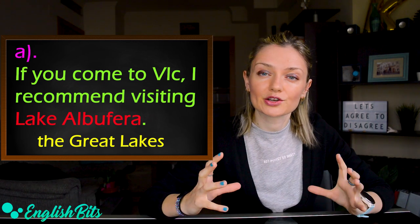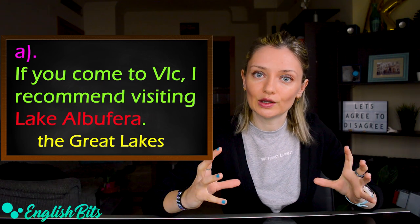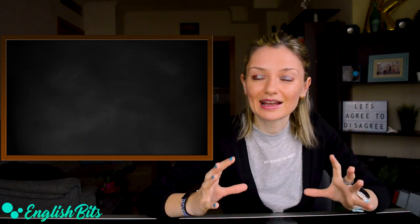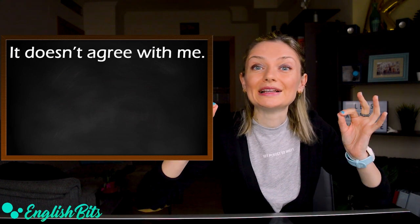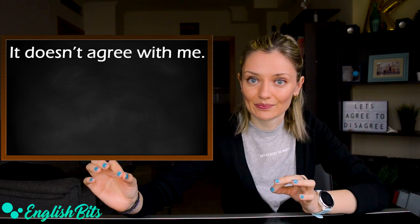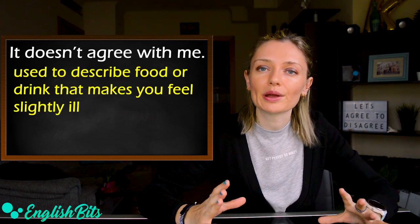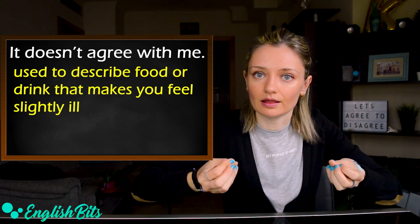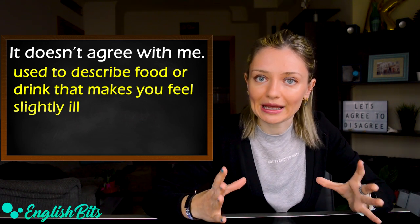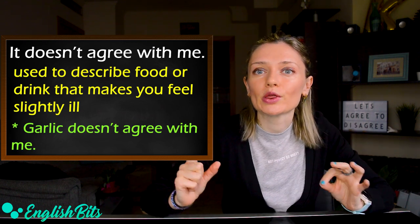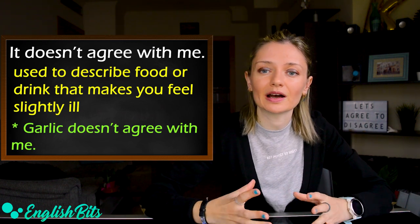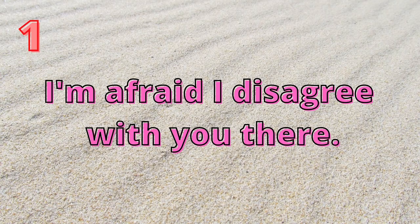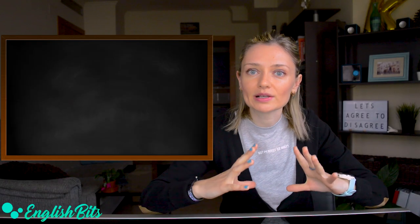Before we look at 10 expressions, just a little side note. I'm going to give you one bonus expression that I think can be very useful, and it's 'it doesn't agree with me'. We use this expression to talk about food or drink that makes you feel slightly ill. For example, in my case, garlic doesn't agree with me, which means that I don't feel good after eating it.